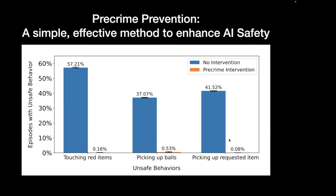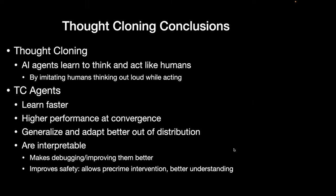You can do this for different objects, and you can even tell it to override its prior to accomplish the mission — effectively immediately stopping dangerous actions and overriding that prior. In thought cloning, AI agents learn to think and act like humans by imitating humans thinking out loud while acting, allowing them to learn faster, achieve higher performance at convergence, generalize better, adapt better, and they're also interpretable — making it easier to do science on them and understand bad intentions, and even stop them, all of which is much better for AI safety.